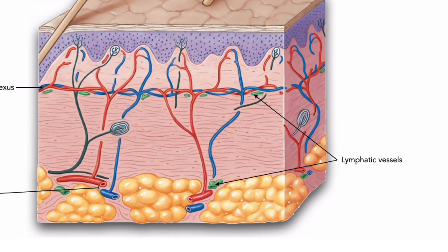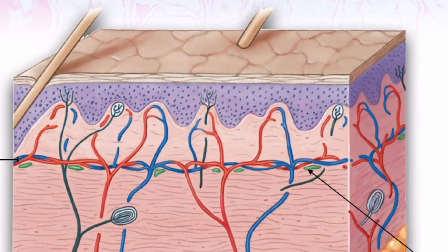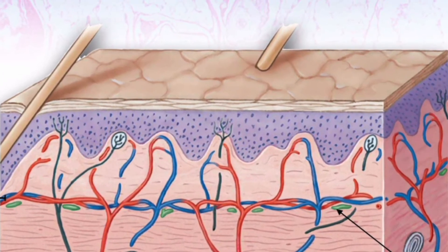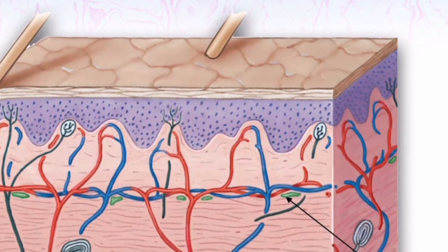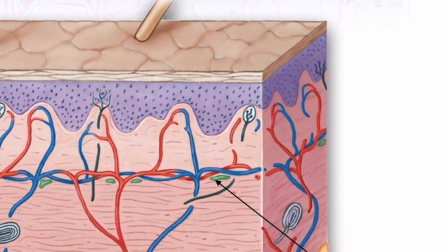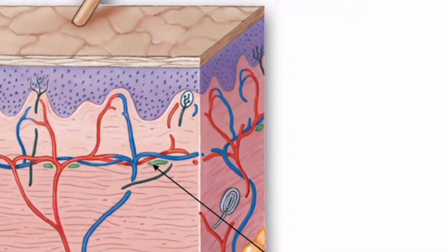Both blood vessels and lymphatic vessels in the dermis help local tissues defend and repair themselves after injury or infection. We have already noted that the deeper layers of the epidermis contain tactile discs, namely Merkel cells, which are fine touch and pressure receptors. The epidermis also contains extensions of sensory neurons that provide sensations of pain and temperature. The dermis contains similar receptors as well as other more specialized receptors.